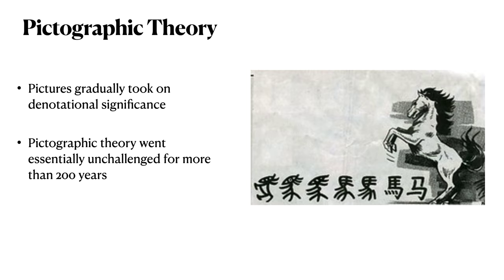According to this pictographic theory of the origins of writing, pictures gradually took on a more and more denotational significance. We can observe this in a picture on the right of a horse. Along the bottom of the picture, we see a sequence of seven symbols. The symbol on the far left is a pictographic depiction of a horse. The picture on the far right is the modern Chinese character for horse. Between the far left and the far right, we see a sequence of symbols becoming more and more abstract, looking less and less like a picture of a horse.